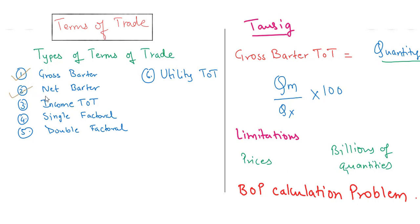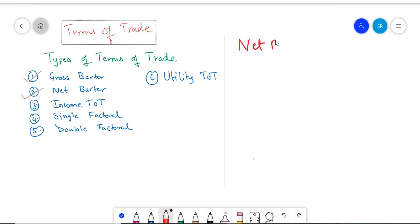The net barter terms of trade. The net barter terms of trade is also sometimes referred to as the commodity terms of trade. The net barter terms of trade is the ratio of the price a country receives for its exports to the price it pays for its imports.